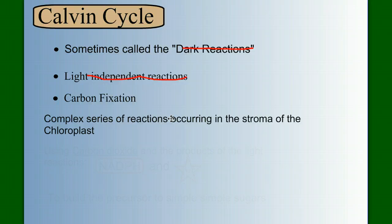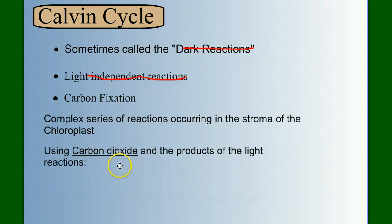The Calvin cycle will consist of a complex series of reactions that occur in the stroma of the chloroplast, using carbon dioxide and the products of the light reactions NADPH and ATP. So let's begin.